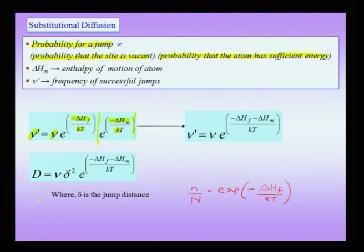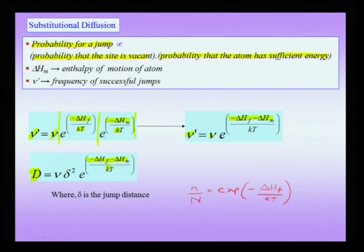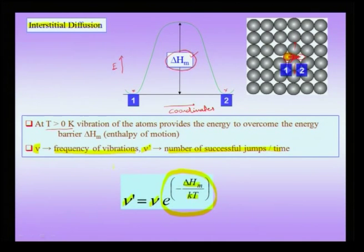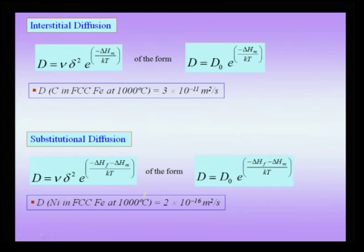Higher the enthalpy of formation of a vacancy, the lower will be the vacancy concentration, the lower will be the chance of a successful jump, and therefore lower will be the diffusion rate. For substitutional diffusion, two terms play an important role: the one based on vacancy concentration and the one based on the enthalpy of migration. Therefore nu prime = nu × exp(−(ΔH_f + ΔH_m) / kT), and the diffusivity of a substitutional species is directly proportional to exp(−(ΔH_f + ΔH_m) / kT).